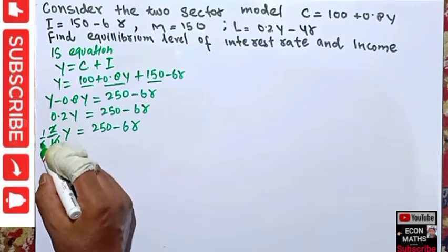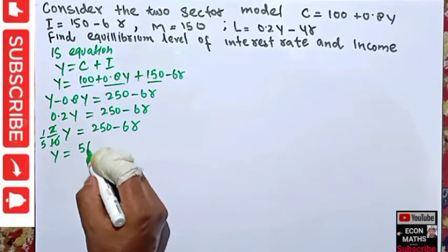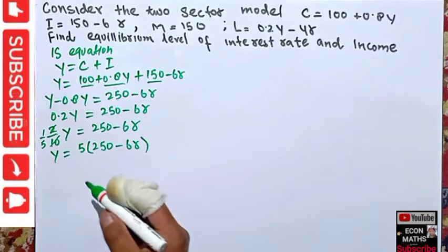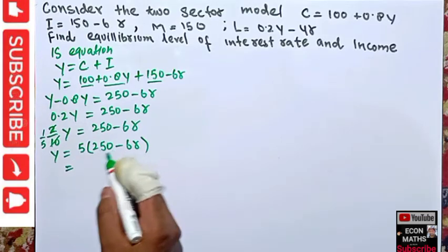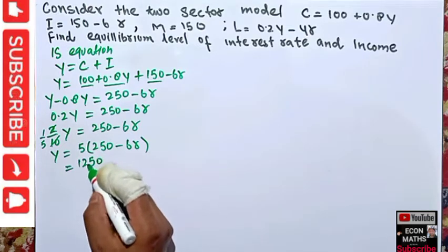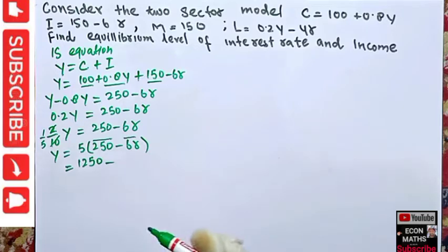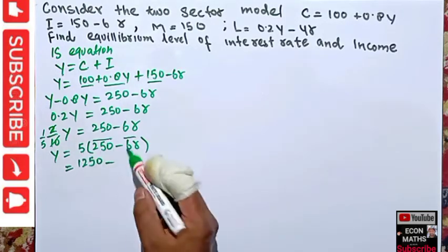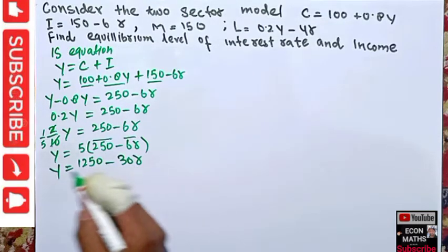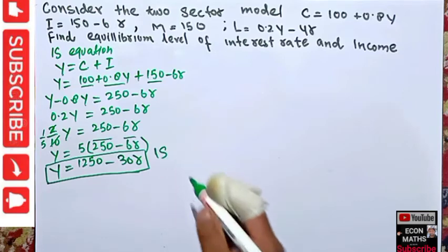So we have (1/5)Y = 250 - 6R. Transposing the 1/5, we multiply both sides by 5, giving Y = 5 × (250 - 6R) = 1250 - 30R. This is our IS equation: Y = 1250 - 30R.